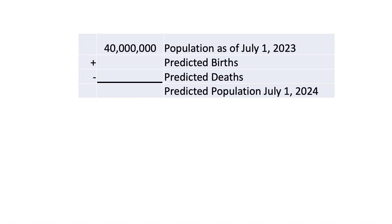Keep in mind, this is not a prediction of Canada's future population. This is disagreement between five generally reliable sources about what Canada's population was several years ago. A lot of Statistics Canada data is reported from July 1 to June 30, so for the sake of simplicity, let's just say the population of Canada was 40 million people on July 1, 2023.